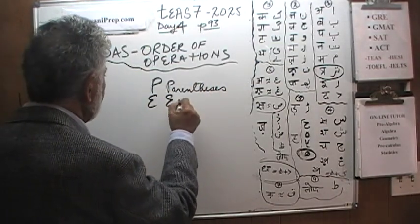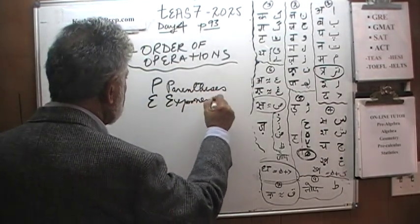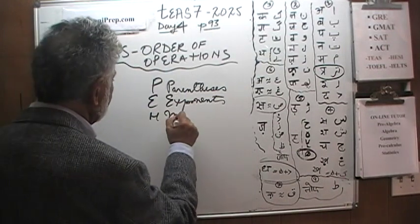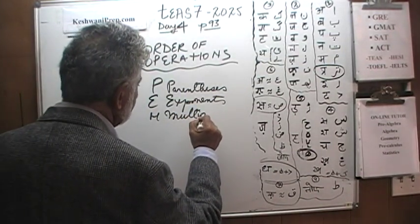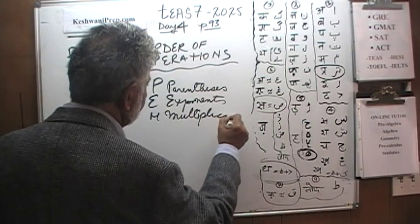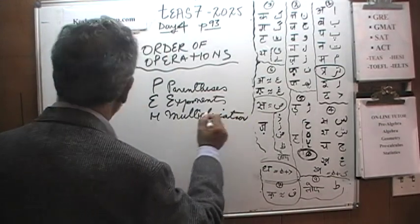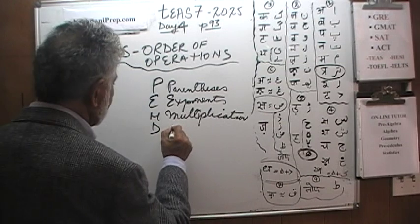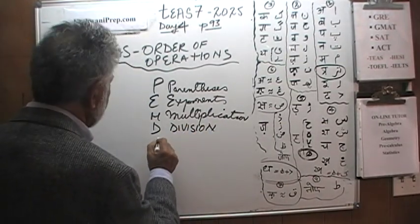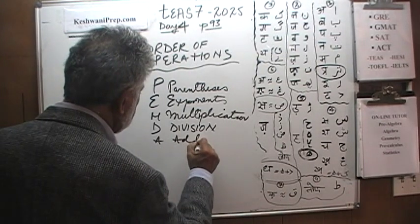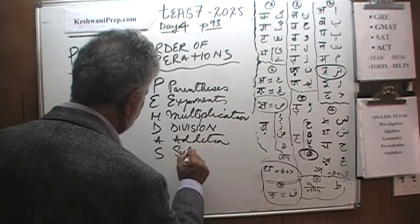E stands for exponents. M stands for Multiplication. D stands for Division. A is for Addition. And finally S is for Subtraction.